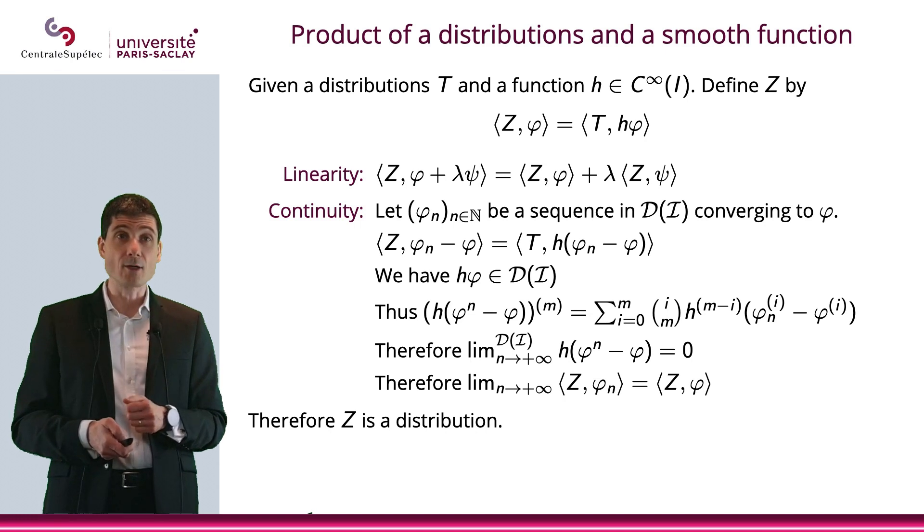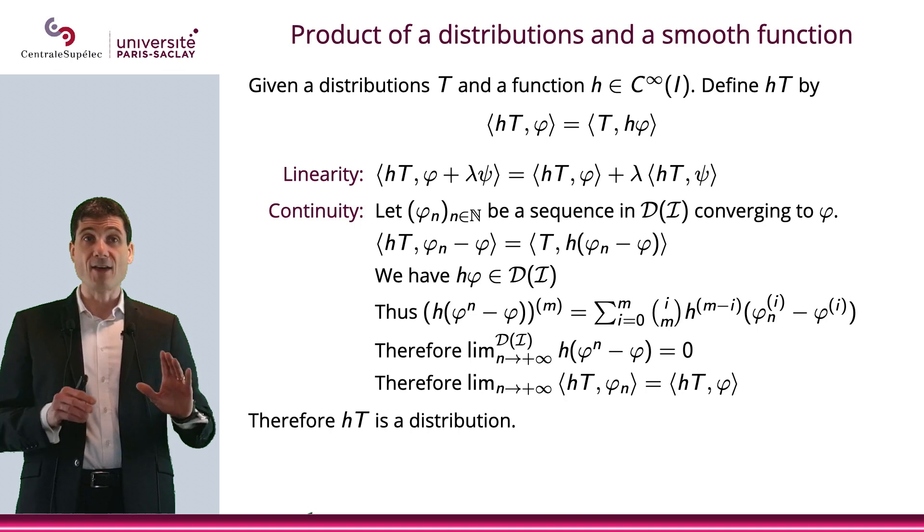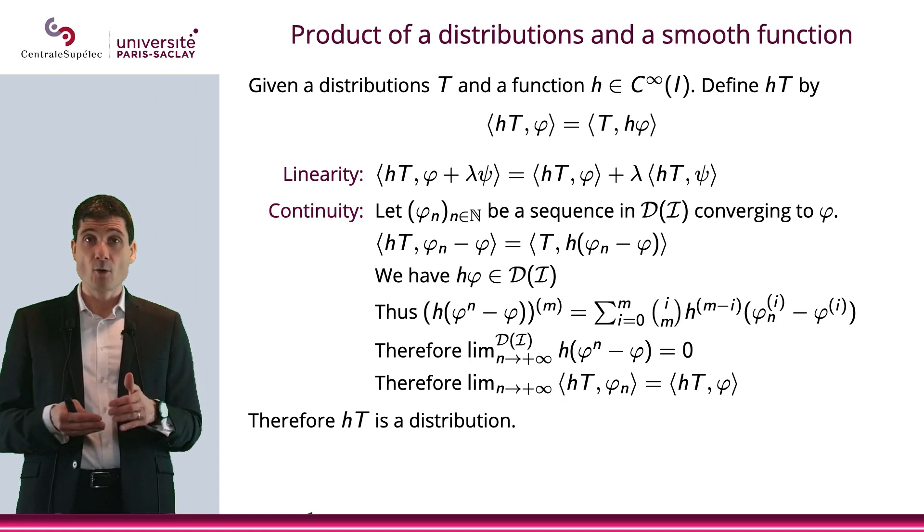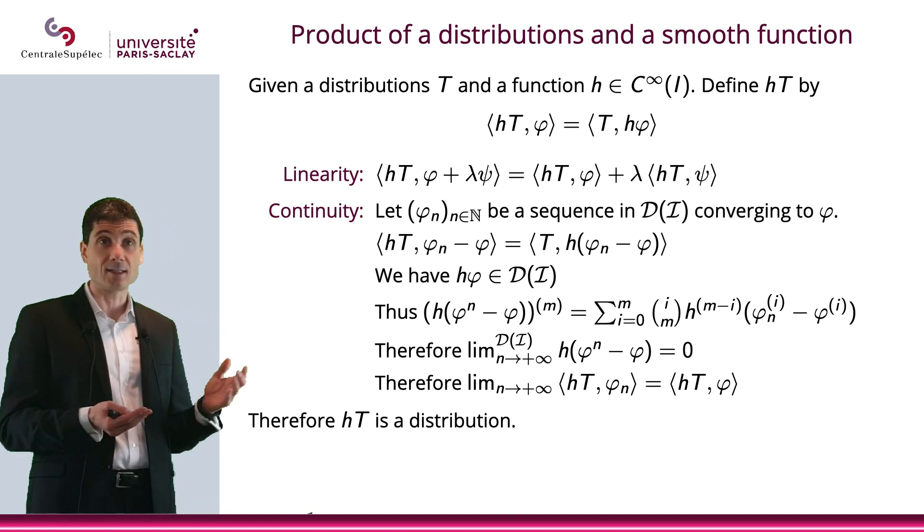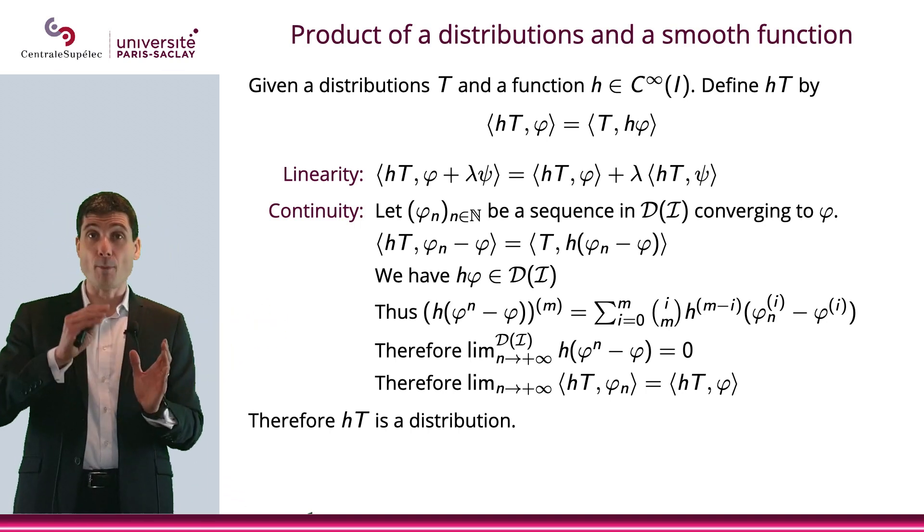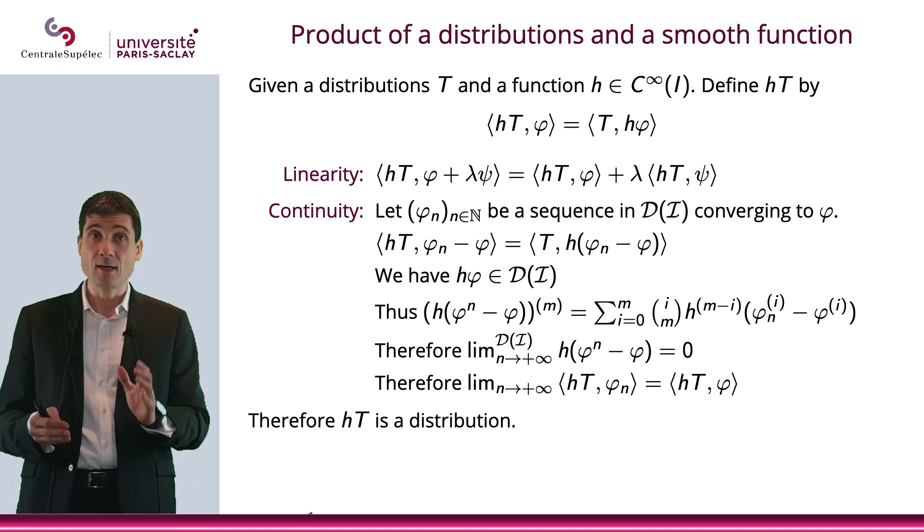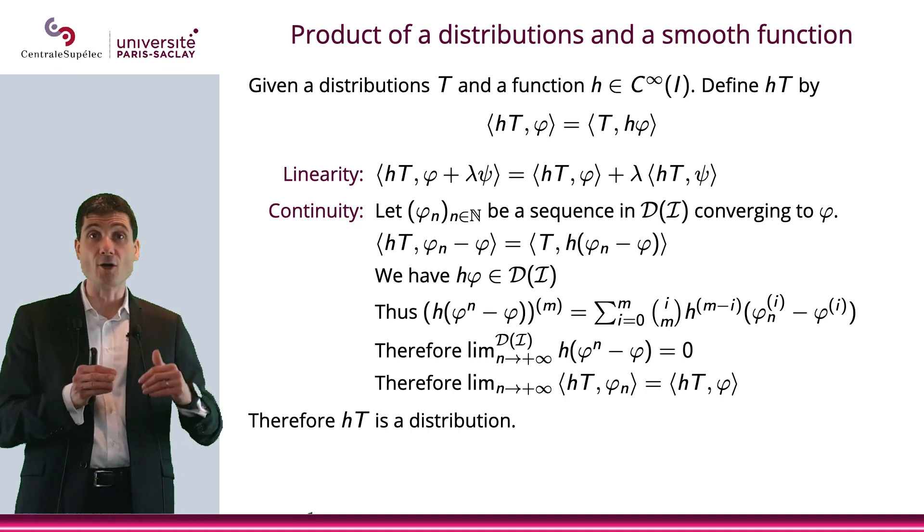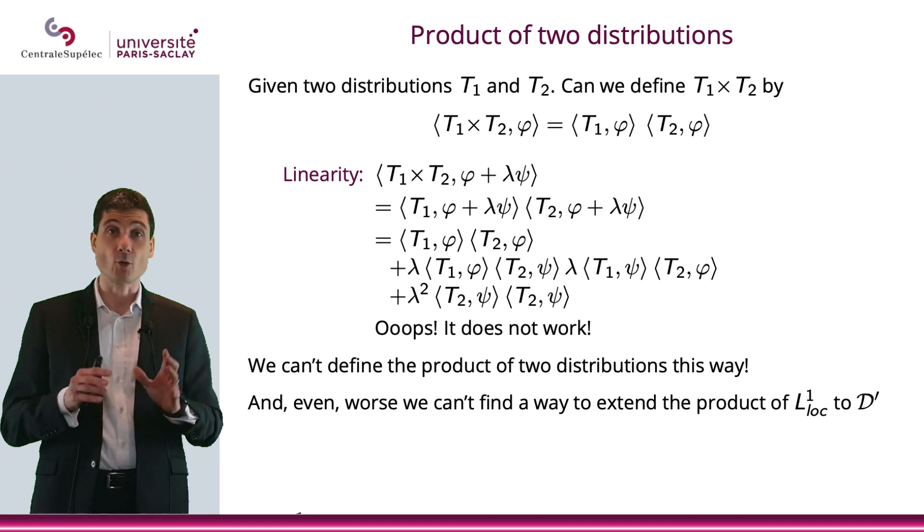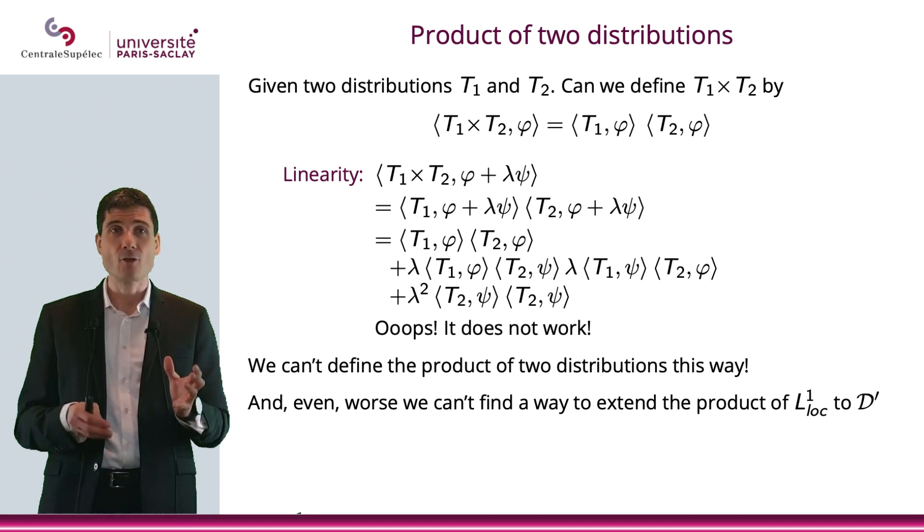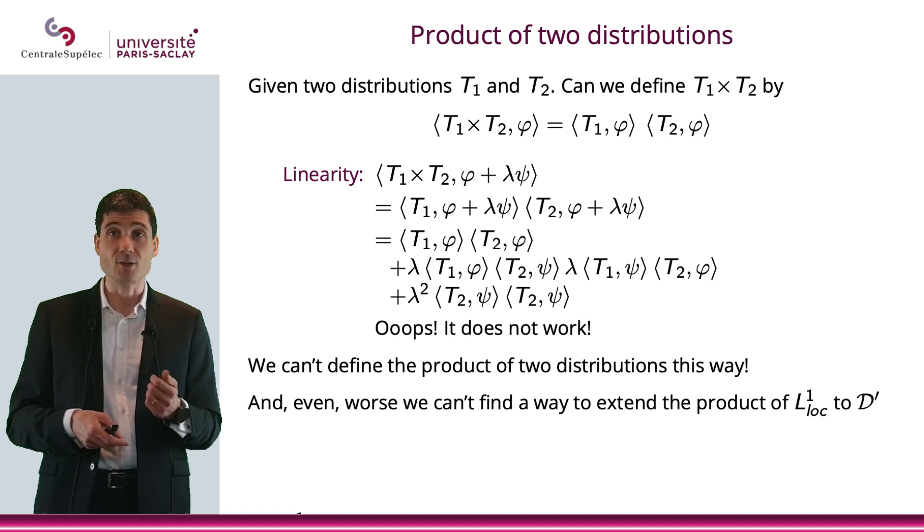This distribution will be called hT. So now I have defined the product of a smooth function h with a distribution T. That will be denoted hT. And it is defined as here: hT applied to φ is equal to T applied to hφ. And again, because I have defined hT on every test function φ, it completely defines that distribution. So again, it extends the product of a C∞ function with a L1 log function to the space of distributions.